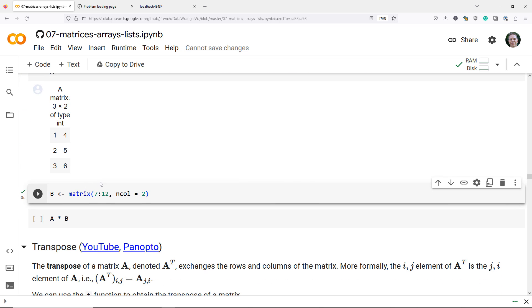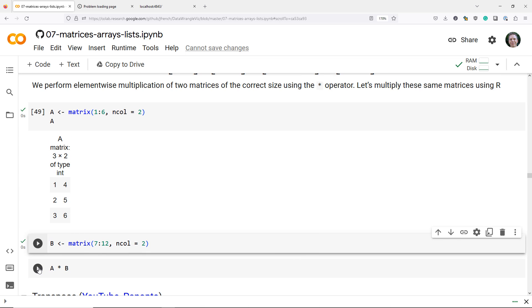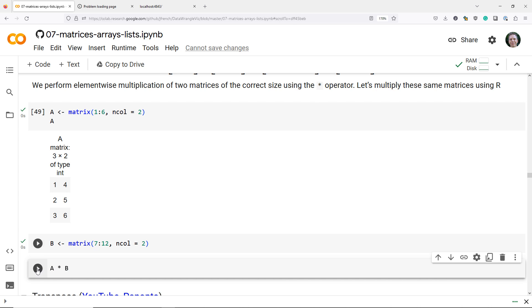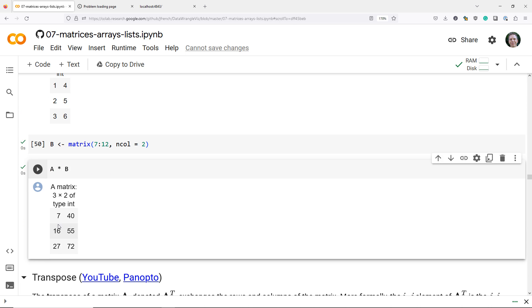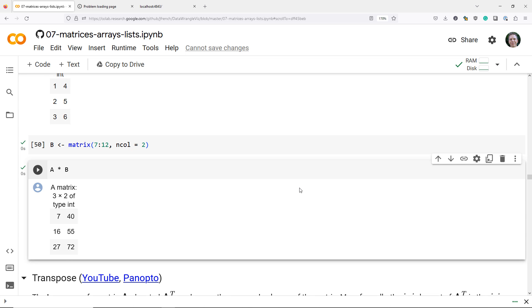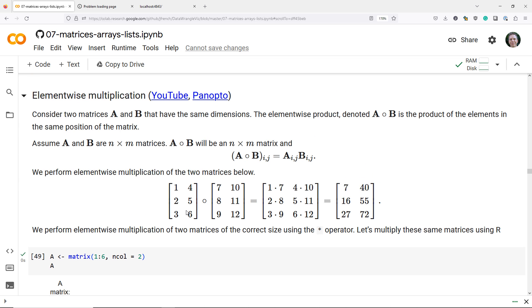And in order to do the element-wise matrix multiplication, we run A star B. So star is the operator that we use to do element-wise matrix multiplication. I run that, and I get 7, 40, 16, 55, 27, and 72, which is exactly what we computed manually above.